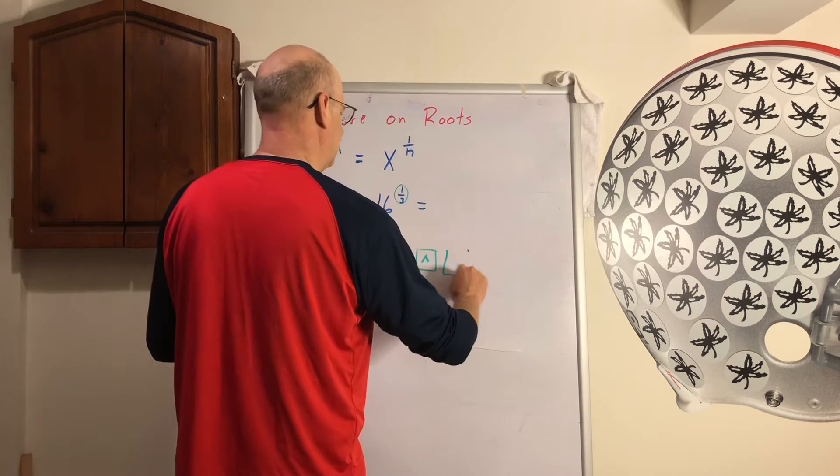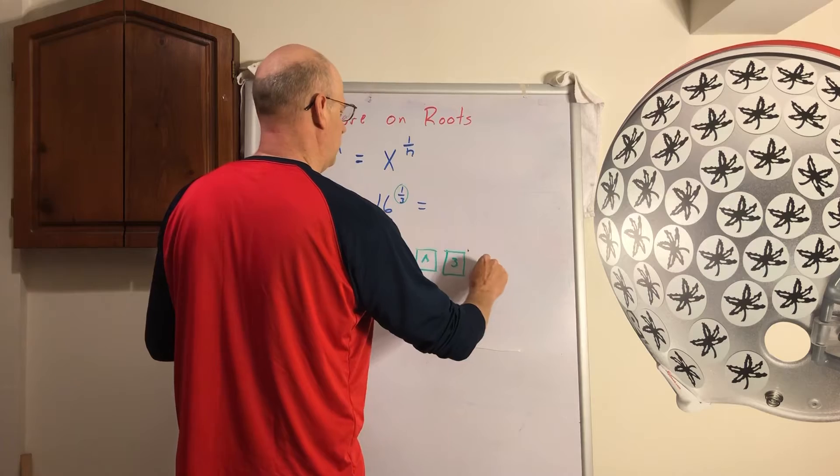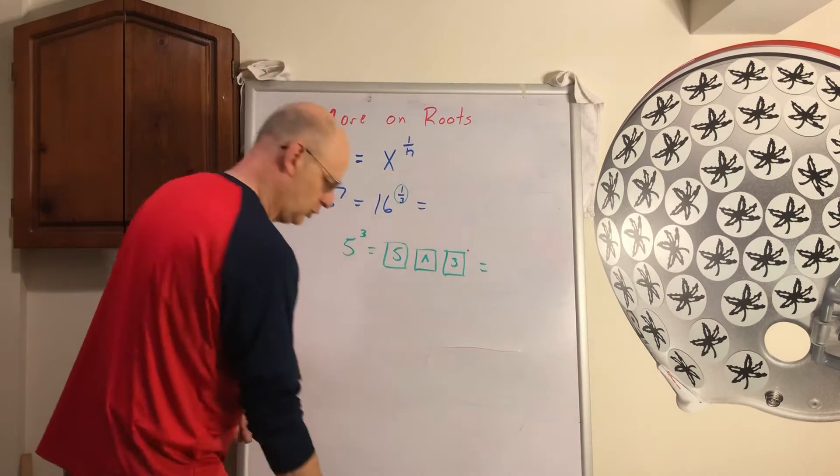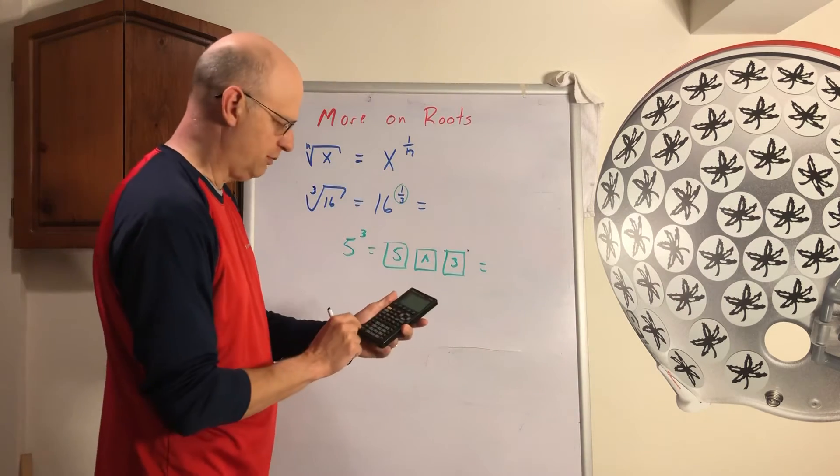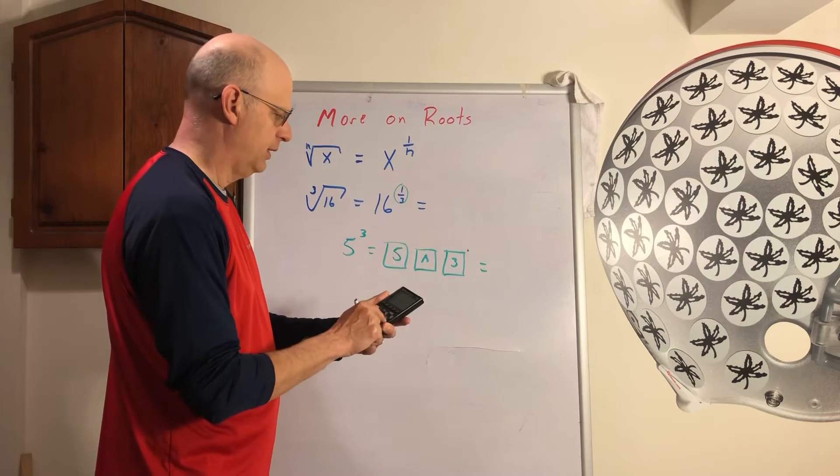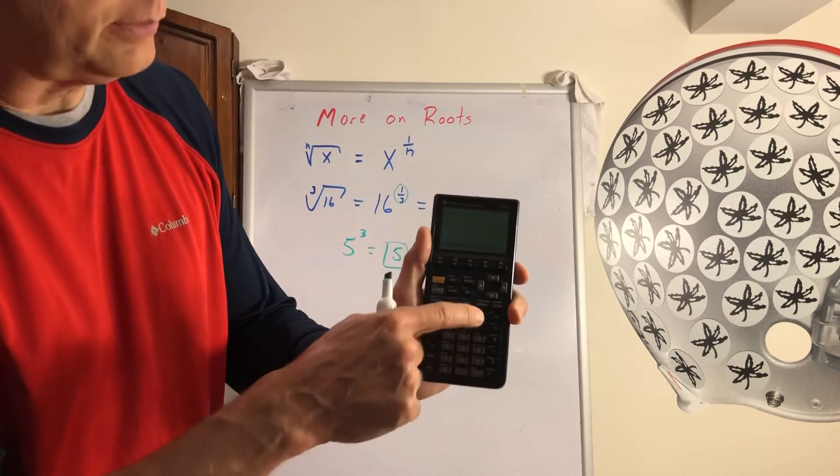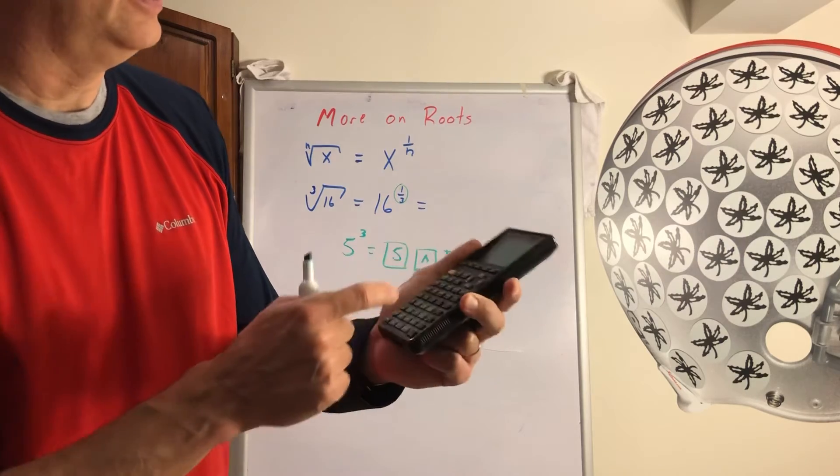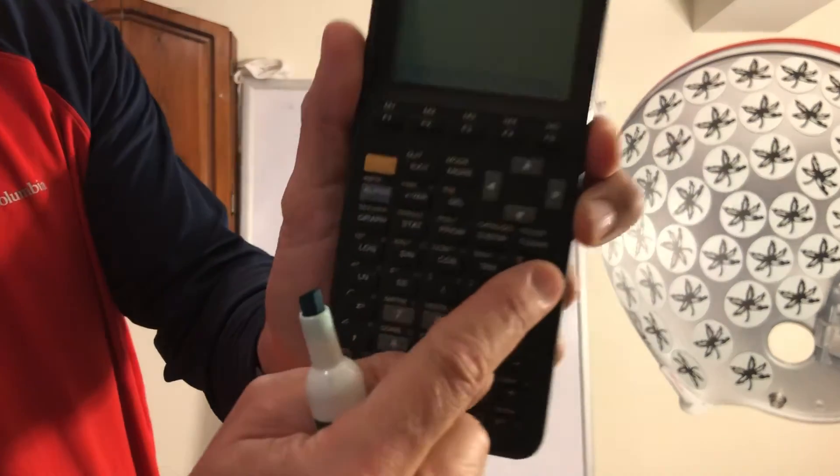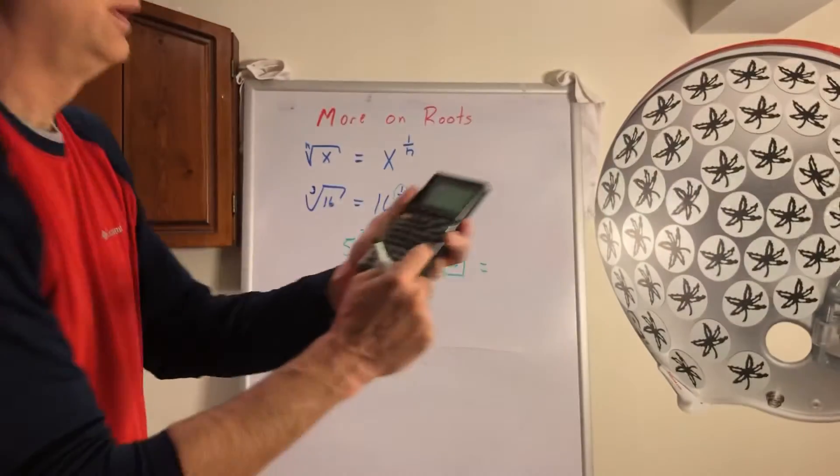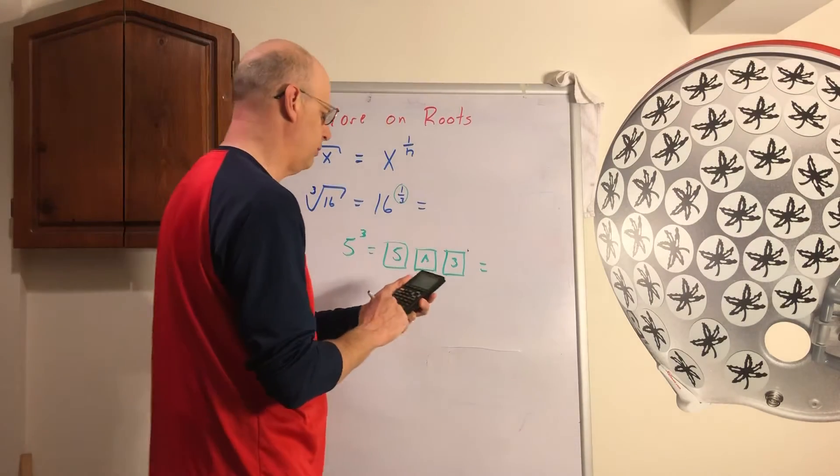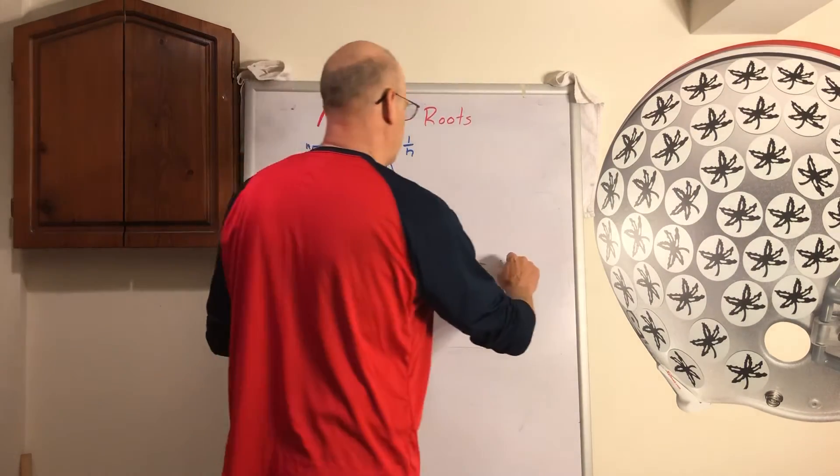And then you would type in a 3 on the calculator. So if you do that in my calculator here you've got the 5 and then a little button right there, a little up caret thing. Hopefully you can see that button right there. And then put to the third power and it's 125.